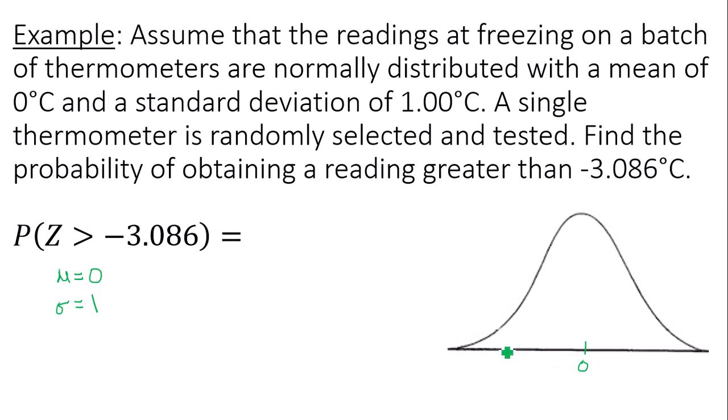It lies to the left. I'll mark negative 3.086 as my cutoff line. I want the probability that a reading is greater than this number, so I need to find the area under the curve to the right of this number—this entire shaded region.